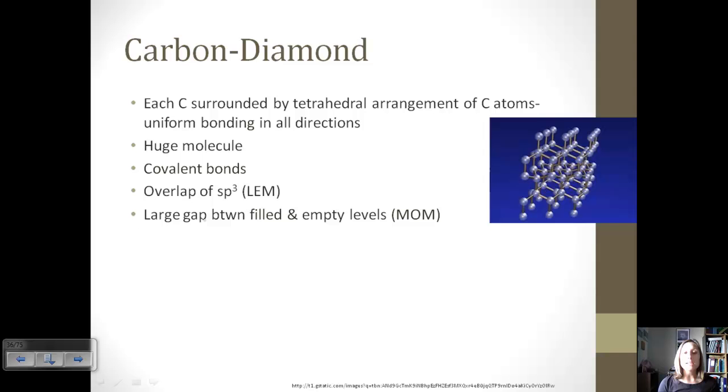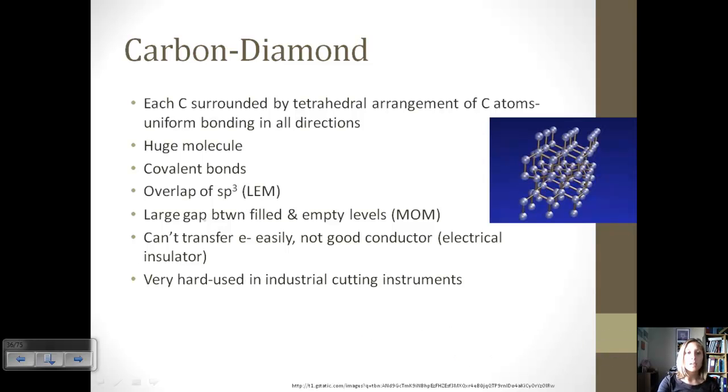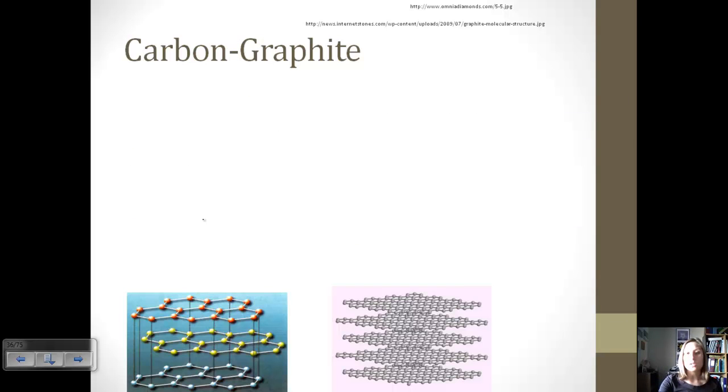And if we look at the molecular orbital model, we have a large gap between filled and empty levels. So that's a little description on the two main models if we look at bonding. Because of this big gap, electrons can't transfer easily, which is why it's not a good conductor. It's actually an electrical insulator because something that's not a good conductor can be a good insulator. And also, another property of diamond, besides it being pretty and sparkly, is that it's very hard because of that structure. And so it's used in a lot of cutting instruments because the diamond won't wear out. And so it might be expensive initially, but that cutting instrument can be used for a long time.